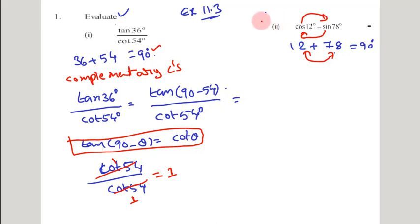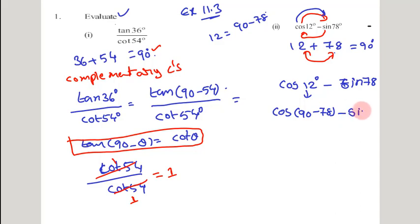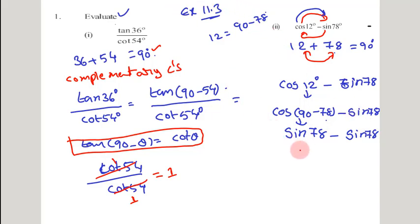I want to apply the complementary angle concept for the first term — I want to write cos in terms of sin. So, cos 12 degrees minus sin 78 degrees: 12 can be written as 90 minus 78. Cos(90 minus θ) can be written as sin θ. By that, this becomes sin 78 degrees minus sin 78 degrees. As both parts are equal quantities and we are subtracting them, we get a value of 0.